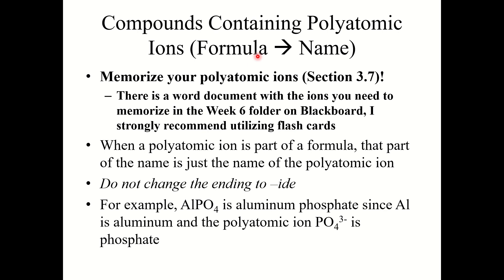Now let's look at compounds containing polyatomic ions. You will need to memorize some polyatomic ions. There is a document labeled "polyatomic ions to memorize" in the Chapter 4 folder on Blackboard — you do need to memorize these. They were also referenced in Section 3.7. Flashcards are strongly recommended. You'll need to know them for going both from formula to name and from name to formula. When a polyatomic ion is part of a formula, that part of the name is simply the name of the polyatomic ion — you do not change the ending to "-ide".